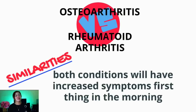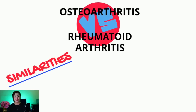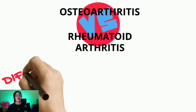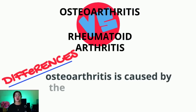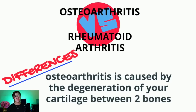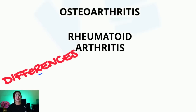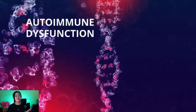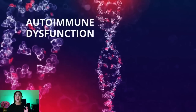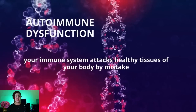Now let's discuss about the differences of rheumatoid and osteoarthritis. One important thing that I need you to know is the cause of this condition. Osteoarthritis is caused by the degeneration of your cartilage in between your two bones. It is caused by wear and tear. That is why this had been implicated with aging. With rheumatoid arthritis, though, it is an autoimmune dysfunction. When we say autoimmune dysfunction, your immune system attacks healthy tissues of your body by mistake. So, in a healthy adult, your immune system would attack foreign invaders such as virus and bacteria.